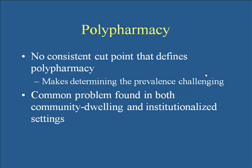Another problem with polypharmacy is that there's no consistent cut point that defines it. In nursing home settings, nine or more medications is generally considered polypharmacy, but without a consistent definition, it's difficult to determine prevalence. It's fair to say we've all seen polypharmacy — I certainly see it every day. As people age and have more disease states, they'll be on more medications, and polypharmacy is not limited to nursing homes; it clearly happens in the community as well.